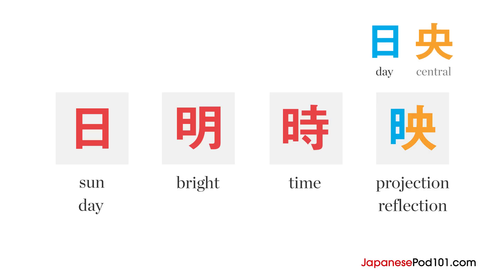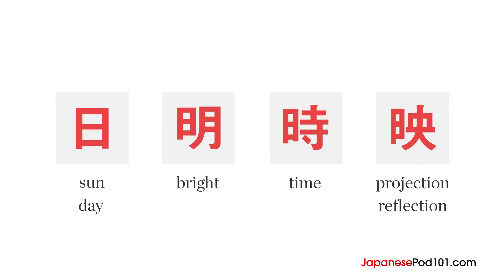The fourth kanji has the day radical on the left and another character meaning the center or middle of a person's body. The character on the right is actually a pictograph of a man. A man standing next to the sun alludes to the idea of something being reflected or projected, which is the meaning of this kanji.